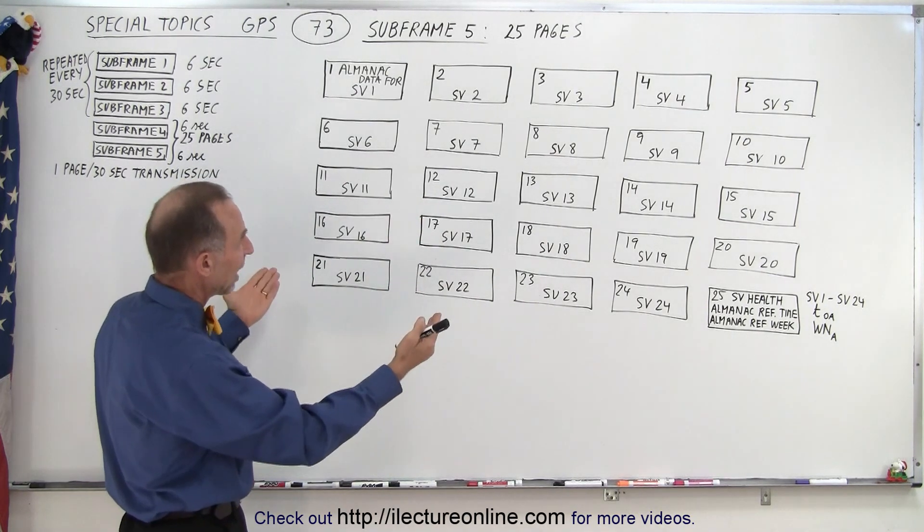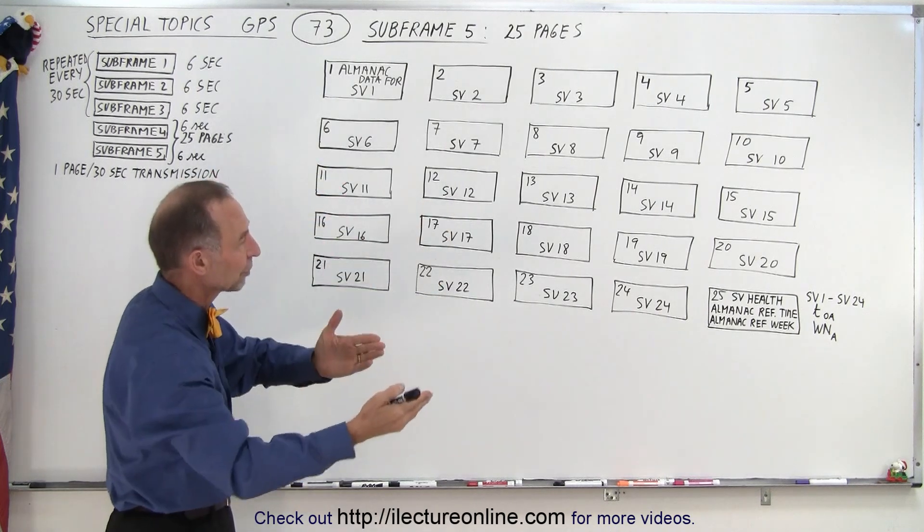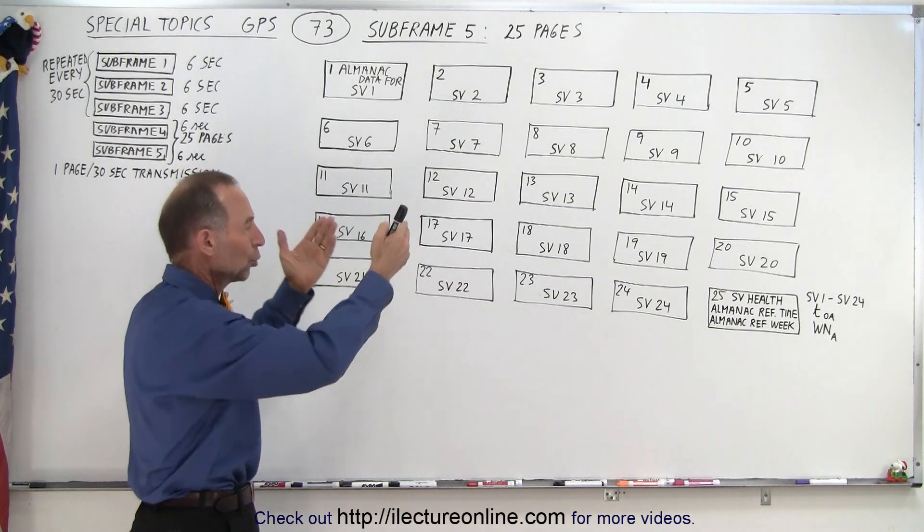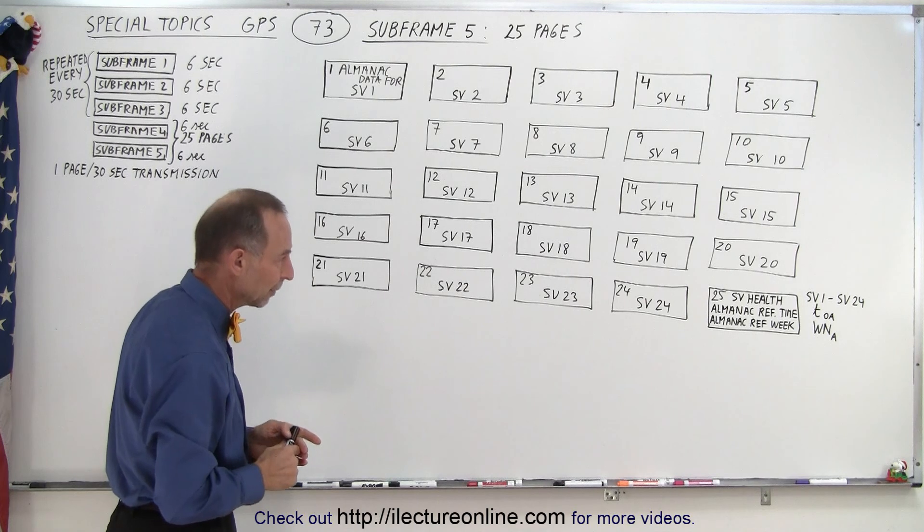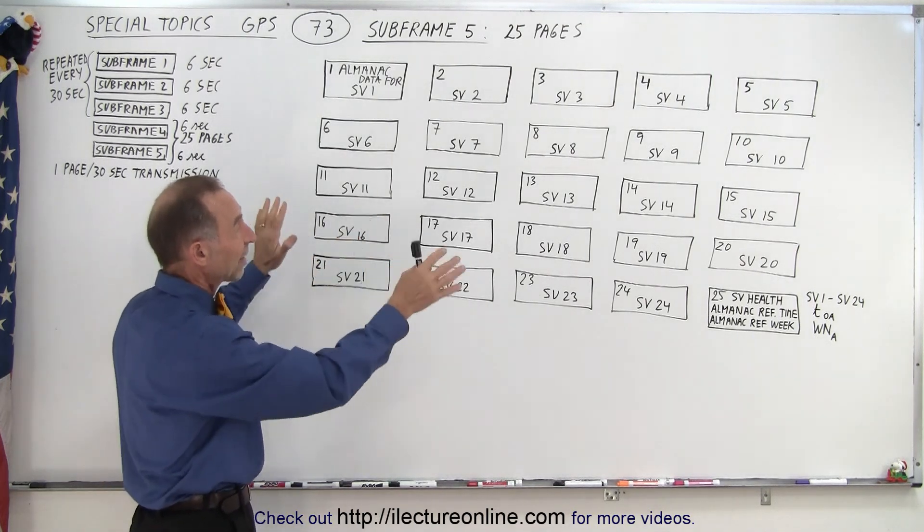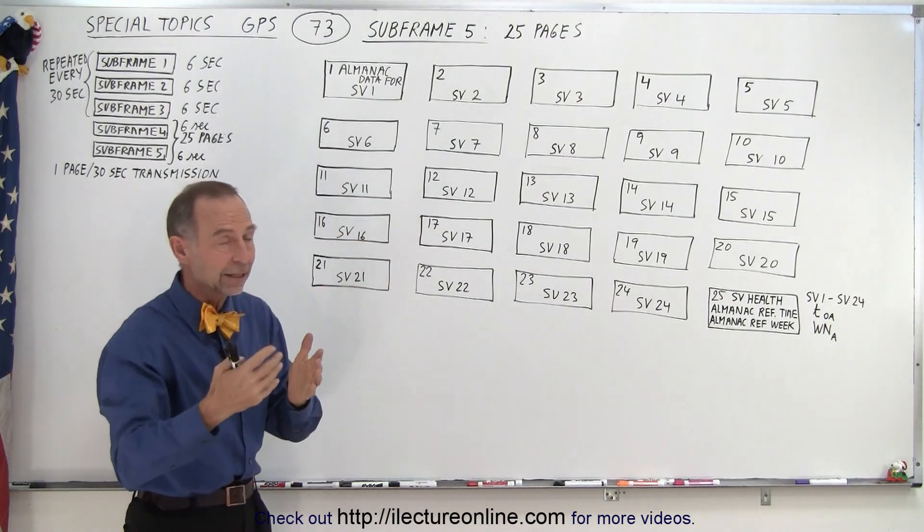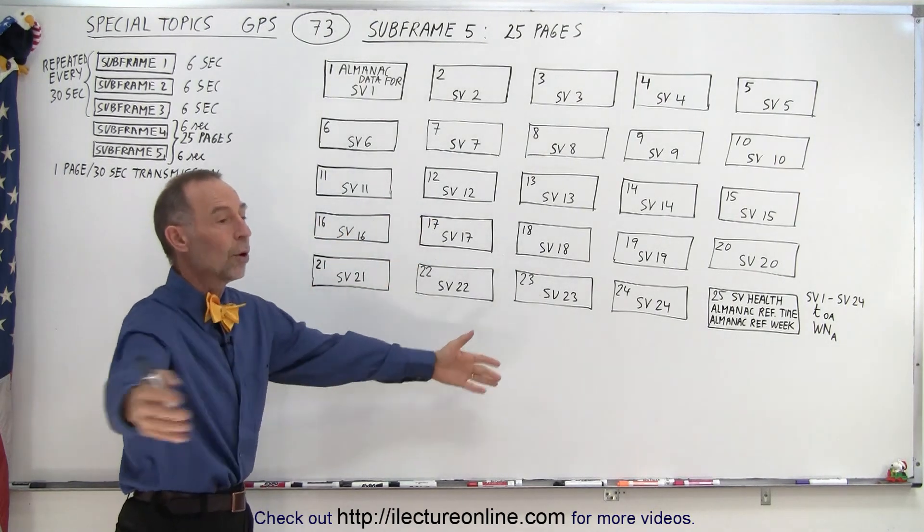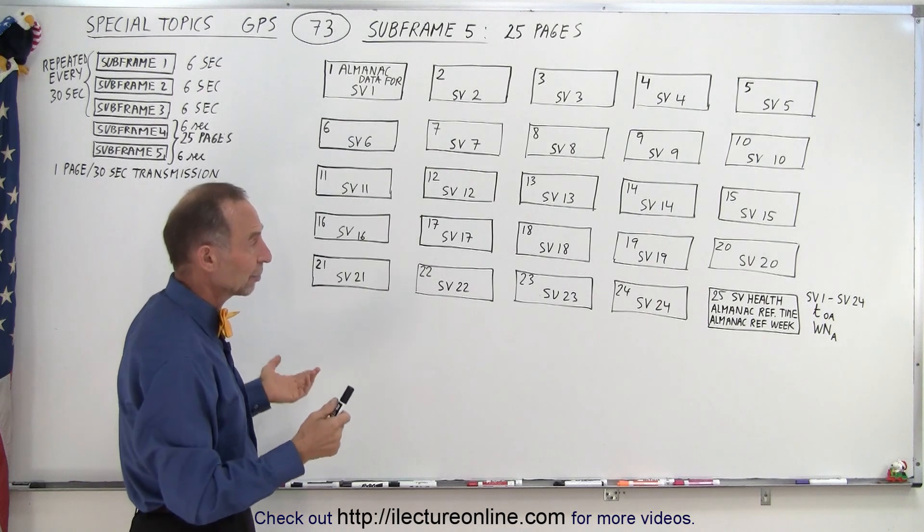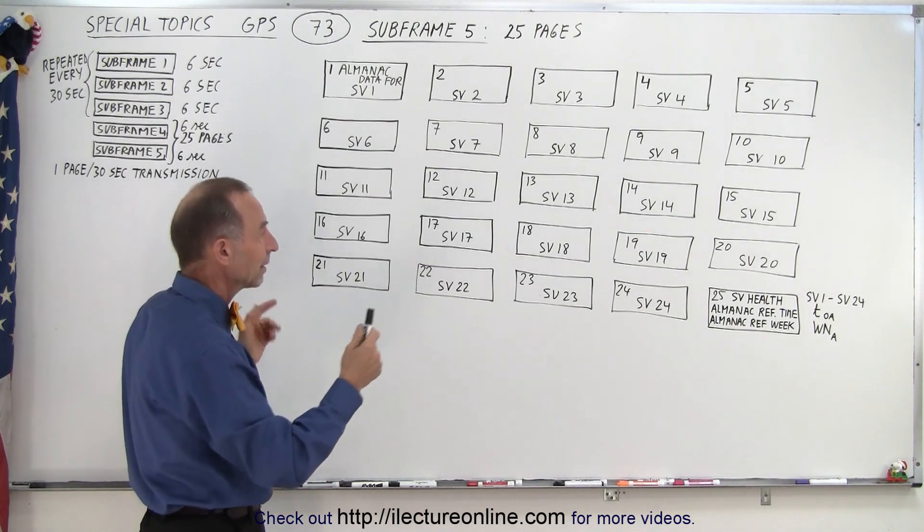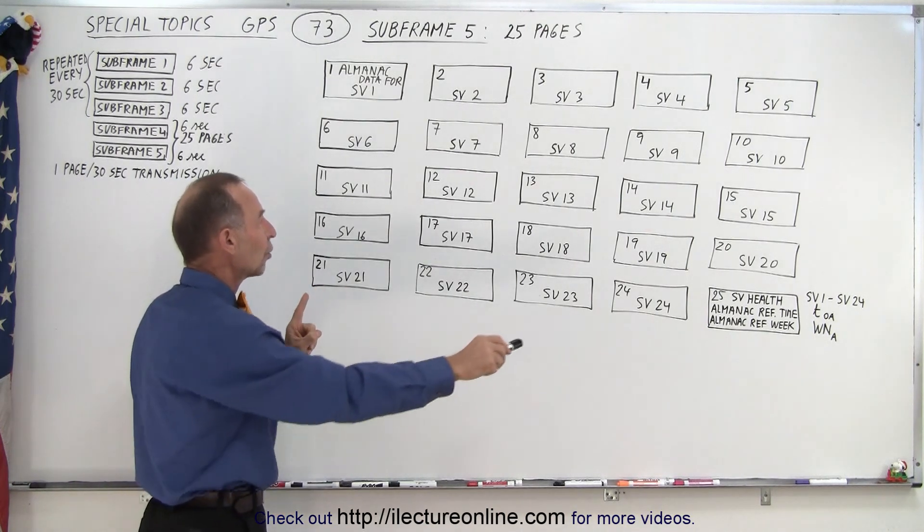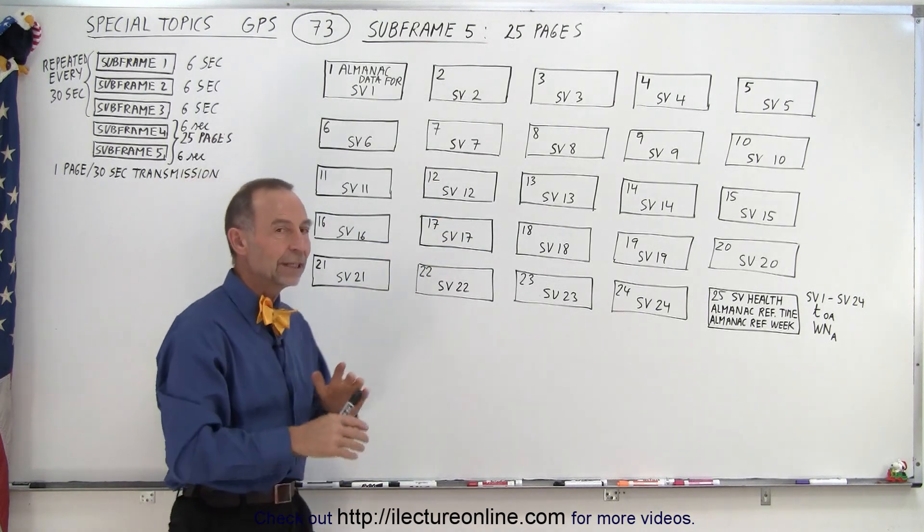It takes 12 and a half minutes to get all that data transferred from the satellite to the receiver. Now notice that this is contained within every satellite. So every satellite sends the same 25 pages of data from the satellite to all the receivers on the Earth. Therefore, it is repeated. So any one satellite contains all the information of all the other satellites.